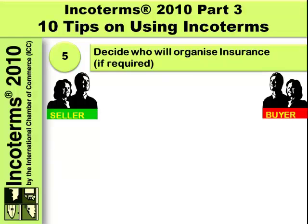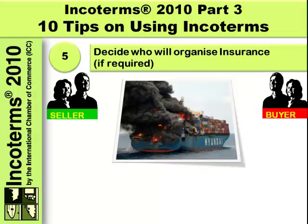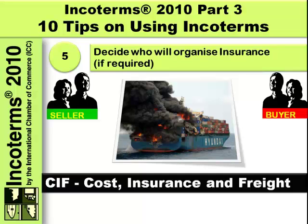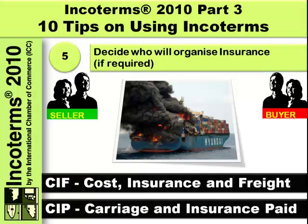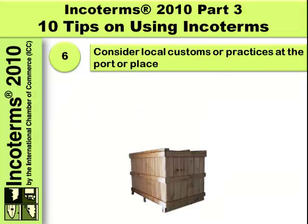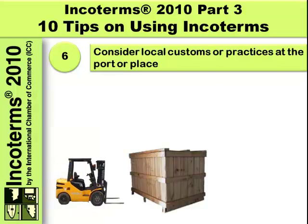Tip number five: decide who will organize the insurance, if required. The seller and the buyer both have a financial interest and an insurable interest in the cargo. If the seller is going to be responsible for the insurance premium and incorporating that into the invoice and their contract price, then Cost Insurance and Freight could be used for sea freight, or for any mode of transport, Carriage and Insurance Paid.